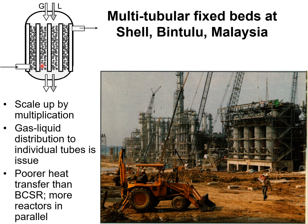Due to the poor heat transfer characteristics of a multi-tubular trickle bed compared to a bubble column slurry reactor for an industrial scale Fischer-Tropsch process, more than a single trickle bed unit has to be placed and operated in parallel. This photograph shows the multi-tubular trickle beds that were under construction for the Shell Fischer-Tropsch synthesis process that was commercialized in Bintulu in Malaysia.